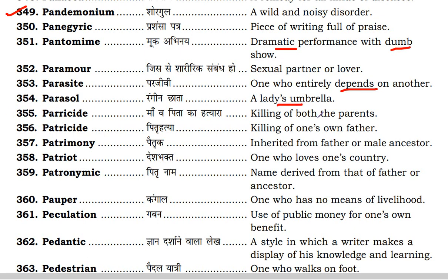Parasite — we discussed previously that the suffix '-cide' means murder. Now we will decide which word to call. Parricide is called the killing of one's parents. The killing of one's own father is called patricide.